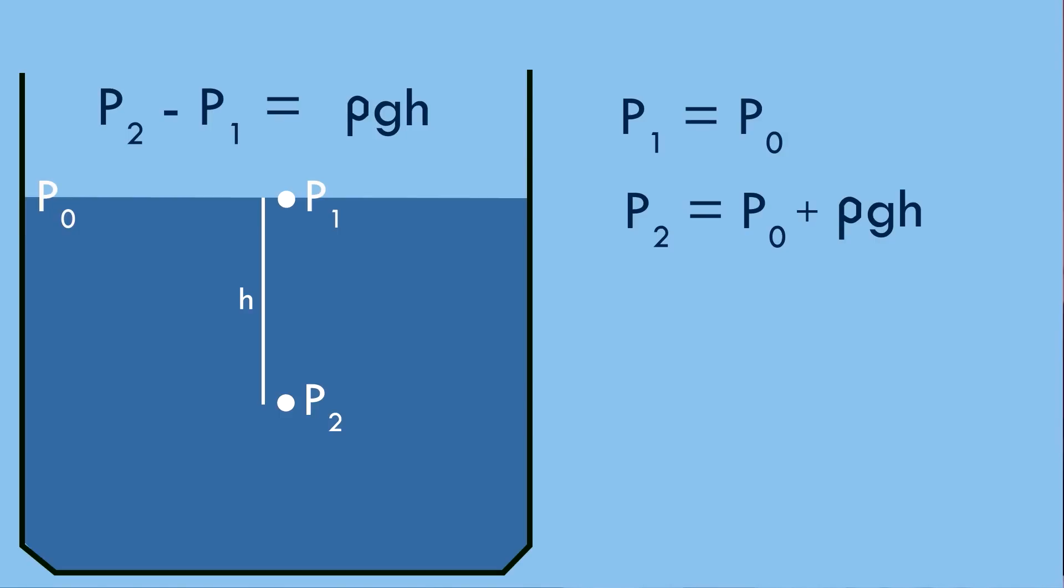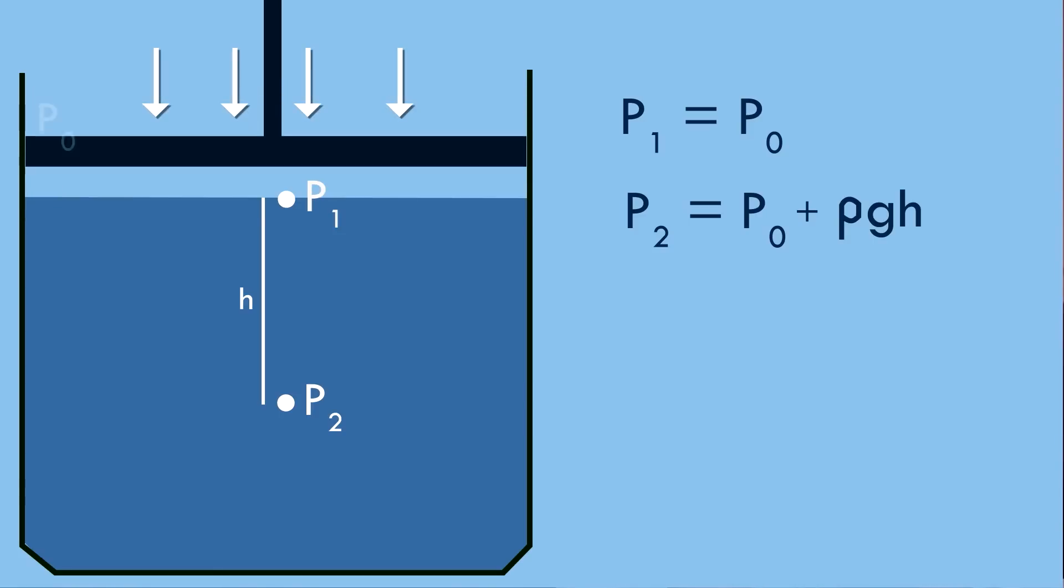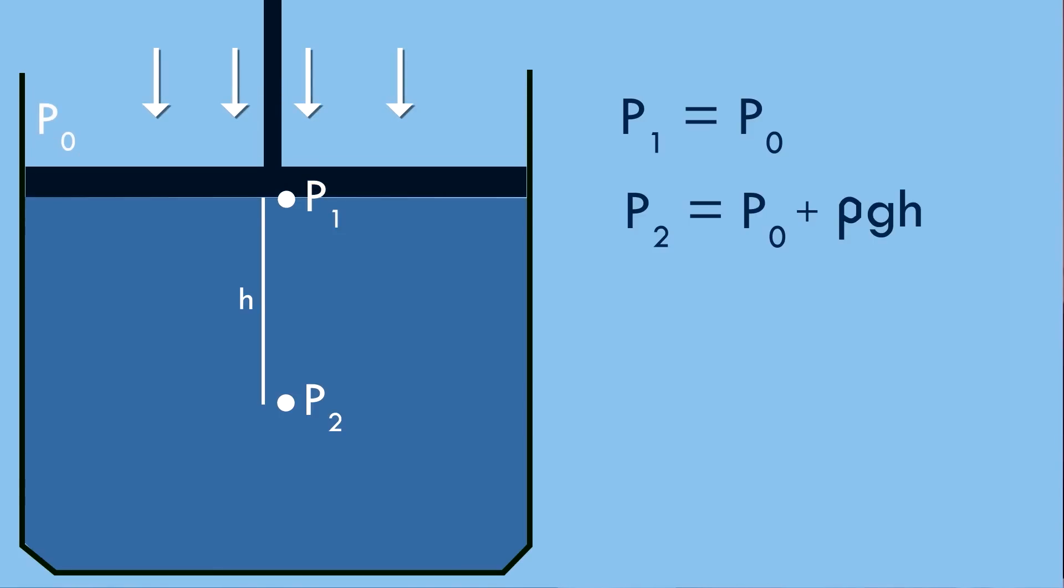Suppose I bring a piston down on the surface of the fluid like this and I press. Whatever force I'm applying divided by the area of the piston is a new increase in pressure that I'm applying at the surface. Let's call that increase in pressure Δp. So the pressure p1 is equal to the atmospheric pressure p0 plus Δp. That must mean p2 is equal to p0 plus ρgh plus Δp. Pretty logical.